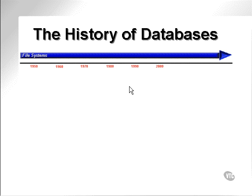The history of databases. Databases have gone through a number of generational changes right back from the mid-40s. Initially, data — if you can call it a database — would have been stored in file systems. As you can see from the diagram, right back to 1945, any storage of data would have been stored in file systems.